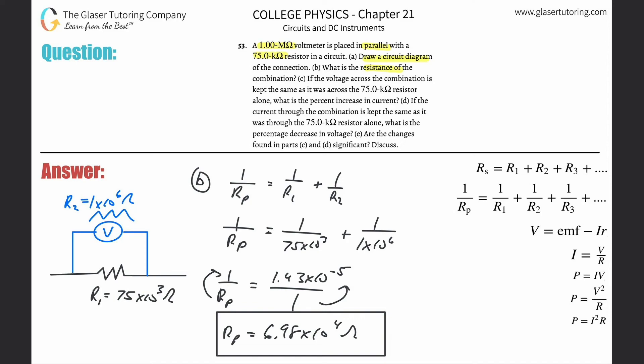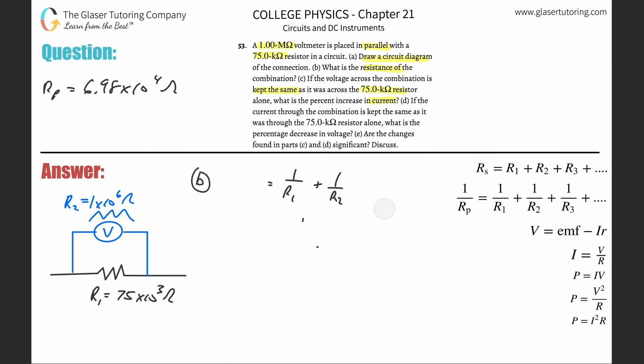It says if the voltage across the combination is kept the same as it was across a 75 kilo ohm resistor alone, what is the percent increase in the current? So the key thing is they're telling us that the voltage is kept the same. So in other words, I'm going to say the voltage alone must equal the voltage in parallel of these two resistances. That means that the current alone times the resistance alone, because remember Ohm's law is V is equal to IR, right? That's all I'm using. I'm using Ohm's law as a substitution. There is then going to equal the current in parallel multiplied by the resistance in parallel.